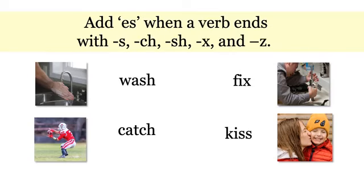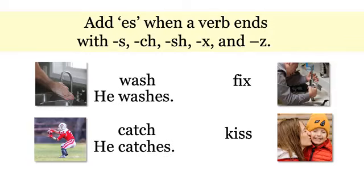Add ES when a verb ends with S, CH, SH, X, and Z. They all have a SH sound on the end. For example, he washes, he catches, he fixes, she kisses.